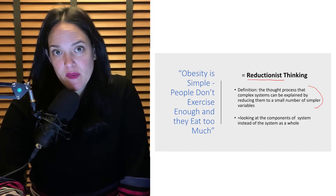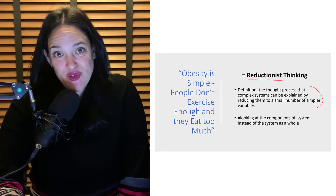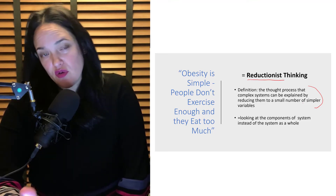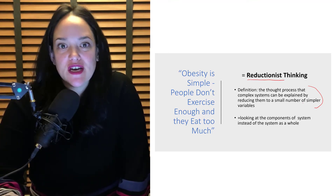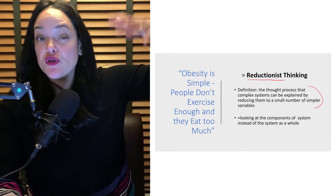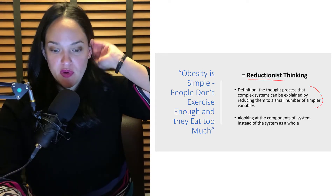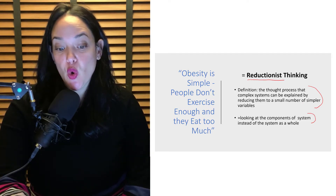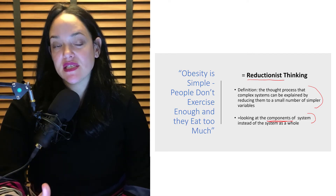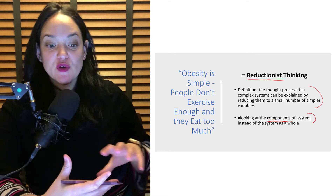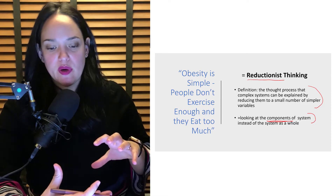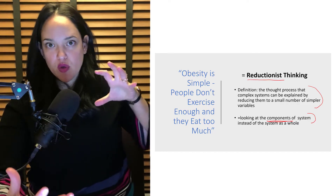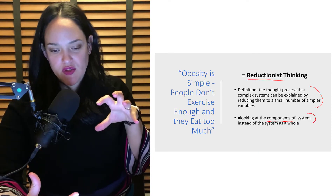I understand why people often want to reduce things — because it makes it easier to study. If we say obesity is just due to a lack of exercise and overeating, that's easier to understand than really looking at all the genetic to environmental factors that promote obesity. This type of reductionist thinking looks at the components of a system instead of the system as a whole. When things are complex, we don't want to just look at the various parts; we also want to look at what the whole thing is doing.